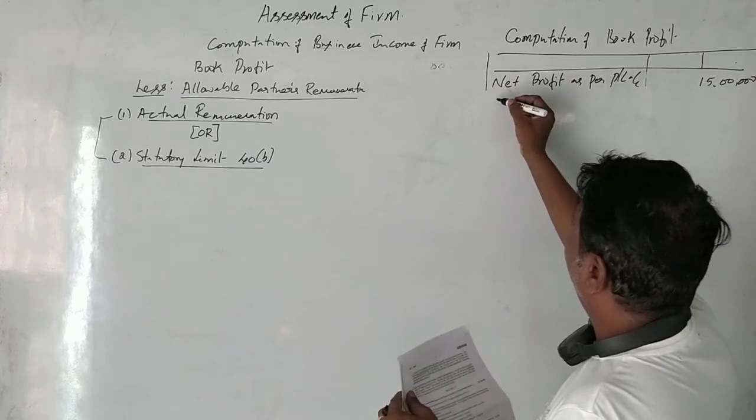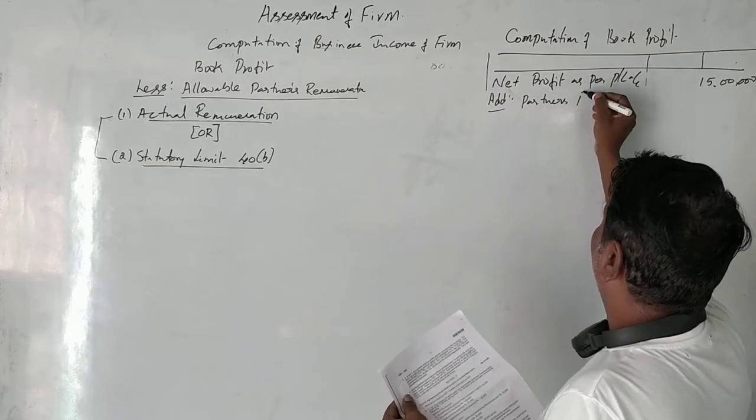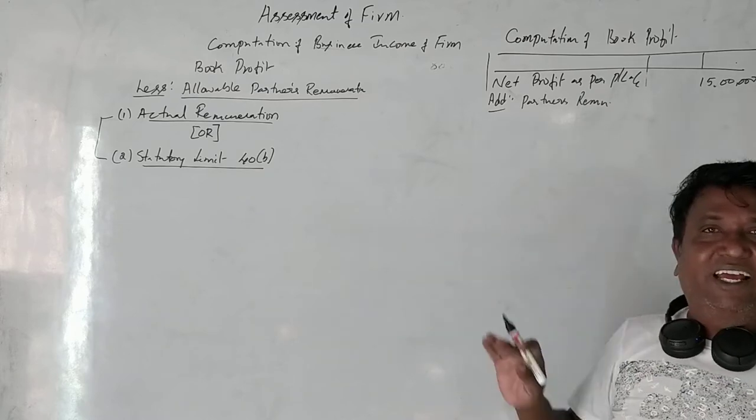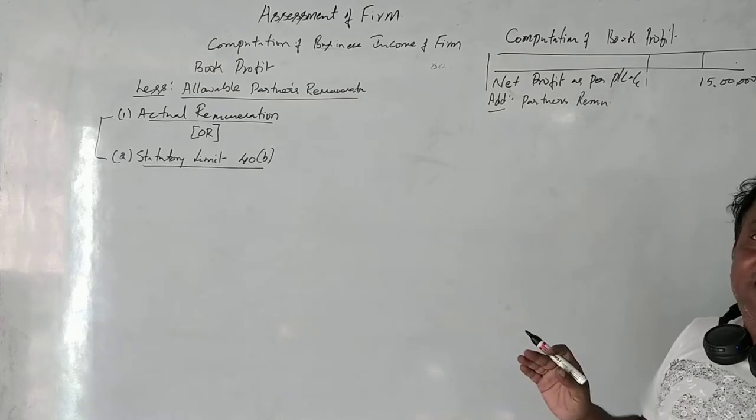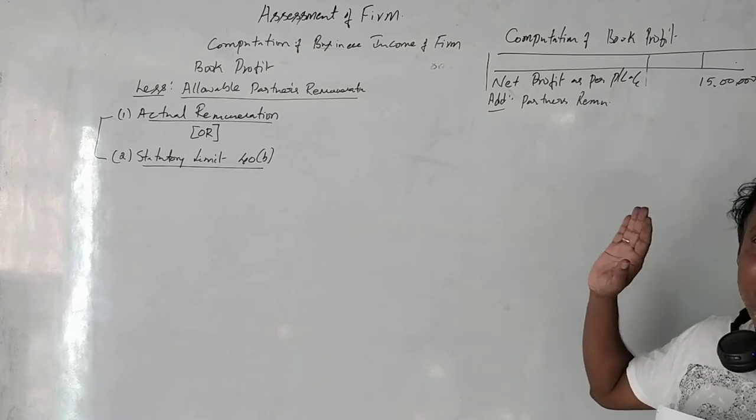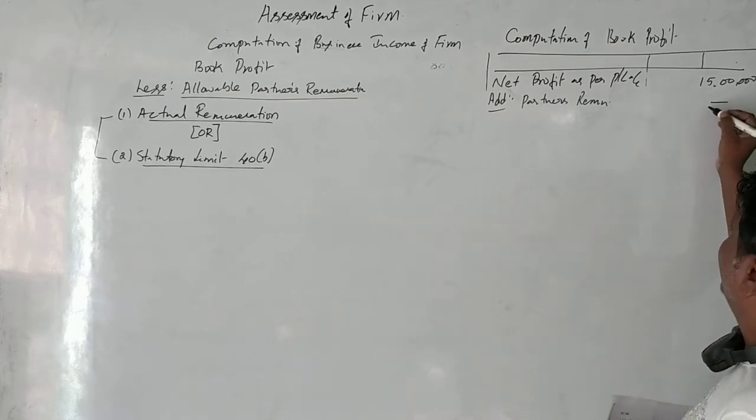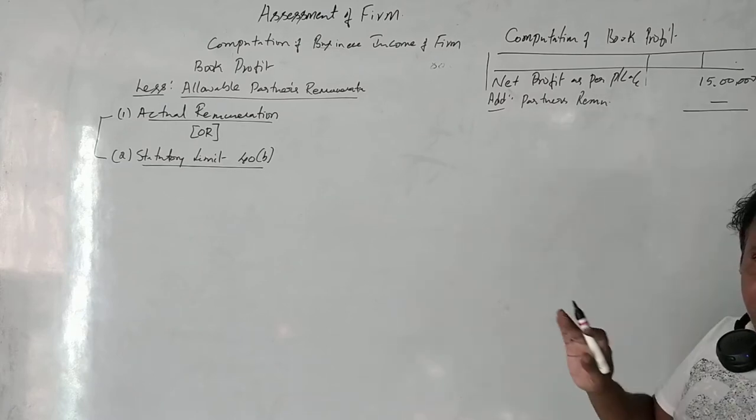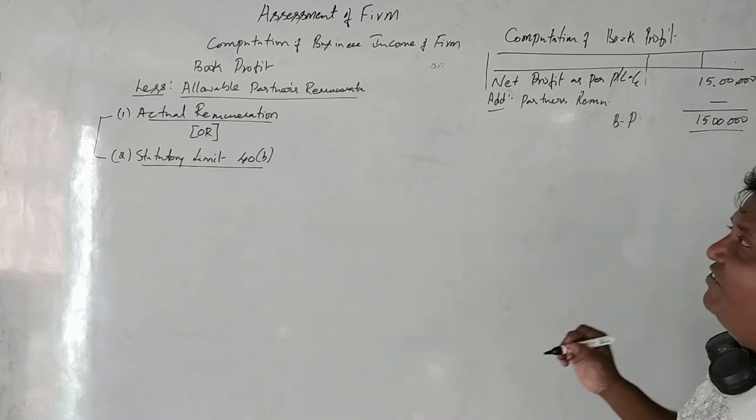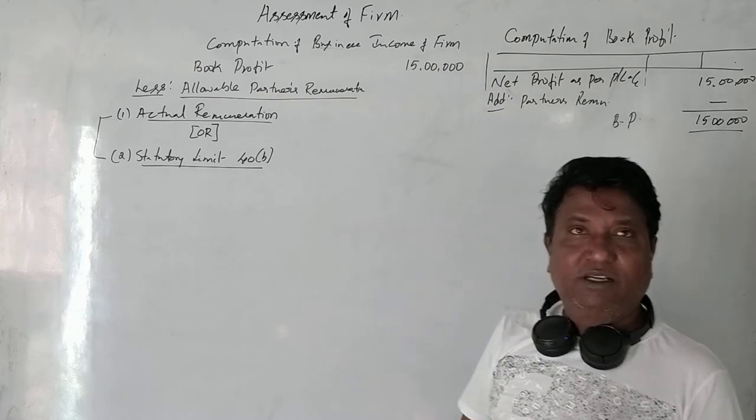Now, the firm's net profit is 15,000,000. Partners remuneration. This is the net profit before debiting. The net profit is minus partners remuneration. If I have a book profit, that's 15,000,000.